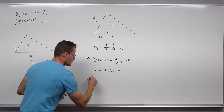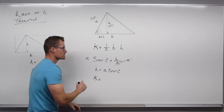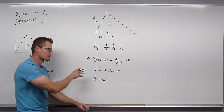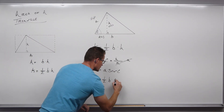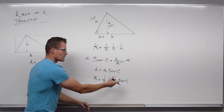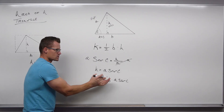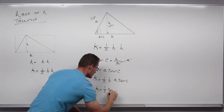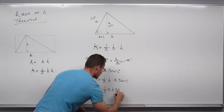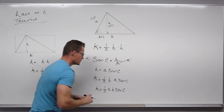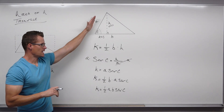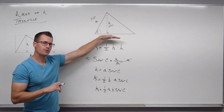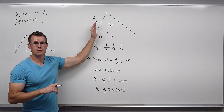This H is the same H in our area formula, so we can substitute. Area of the triangle is one half B times H — but instead of H, we use A times sine C. With commutativity of multiplication, we get: area equals one half times A times B times sine of the angle between them.